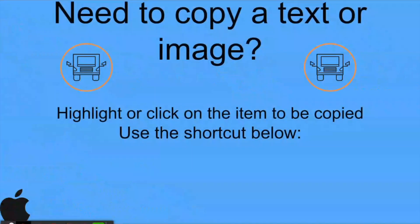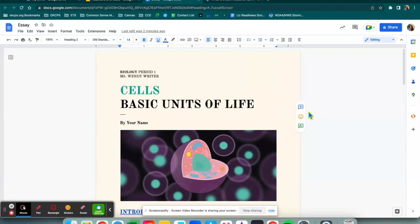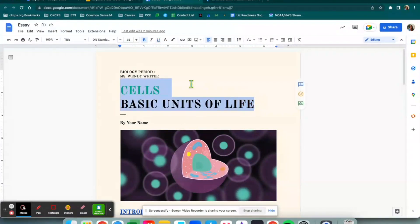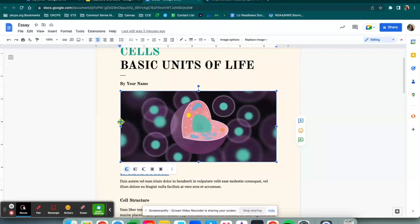If we need to copy text or an image and paste it somewhere else, first I need to copy it. I need to highlight or click on the item to be copied and then use the shortcut Command+C. To show you how to copy, I'm going to use this document right here from Google Drive. If I would like to copy this text, I need to first highlight it so that my computer knows that's what I'm copying — I click and drag my mouse across the text and then Command+C. Now it is copied to my clipboard. If I want to copy an image, I need to click on it, make sure it's highlighted with the blue dots around it, and Command+C.